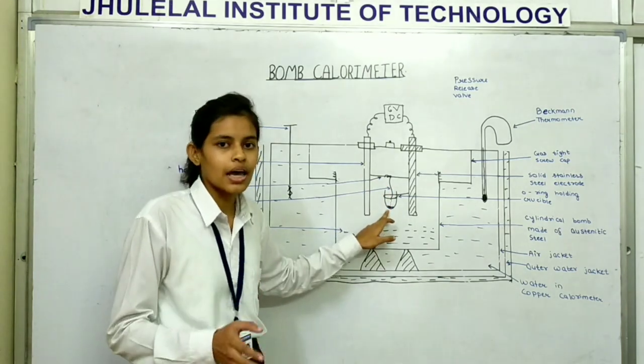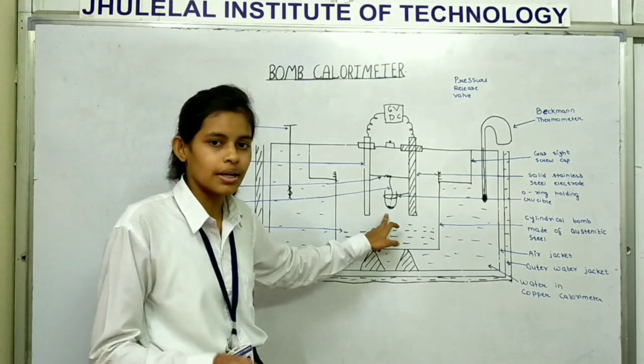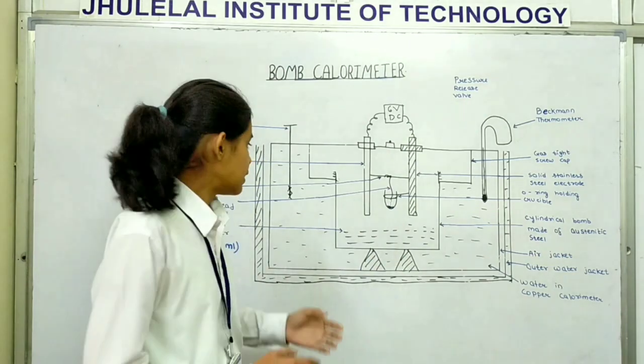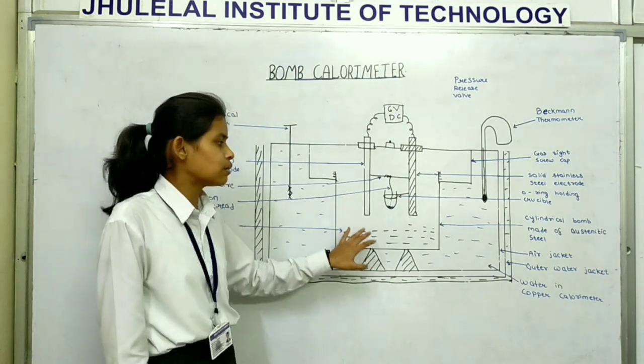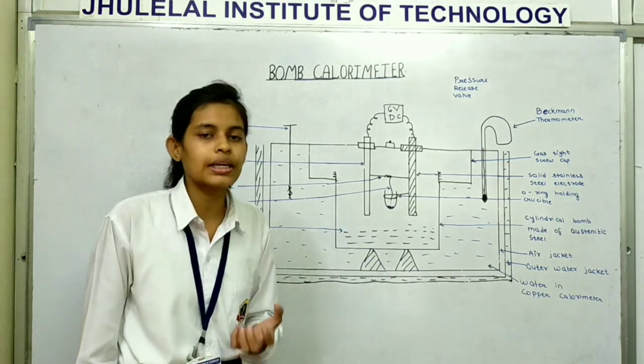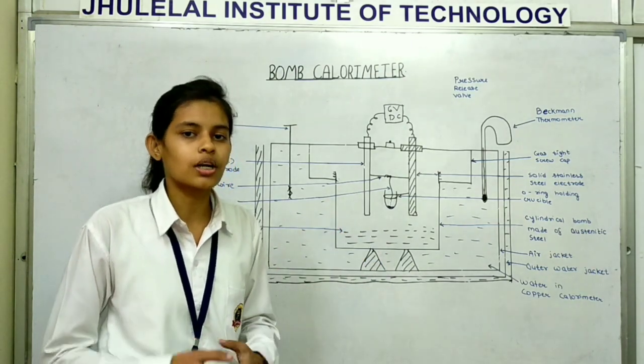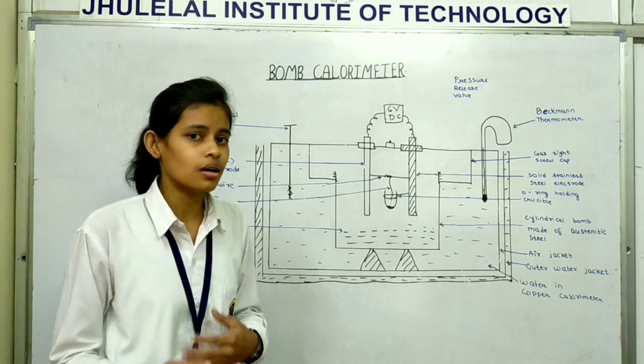One cotton thread is attached to the fuse wire and another is attached to the crucible in contact with the fuel. 10 to 15 ml of distilled water is taken in bomb which absorbs the acid vapor during combustion.